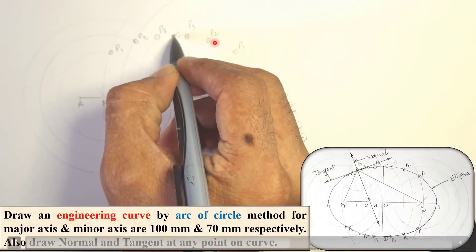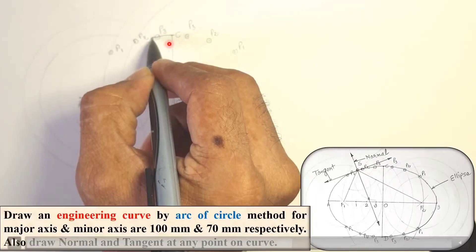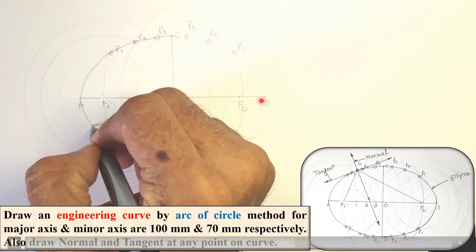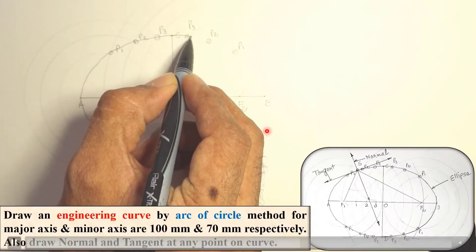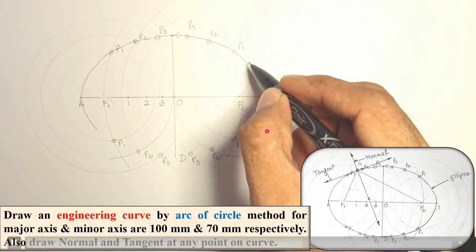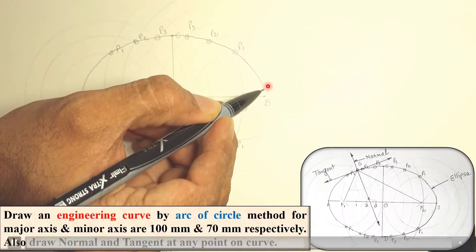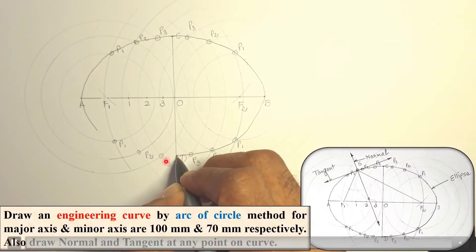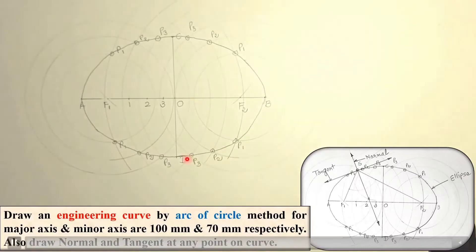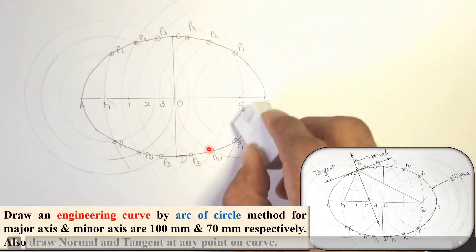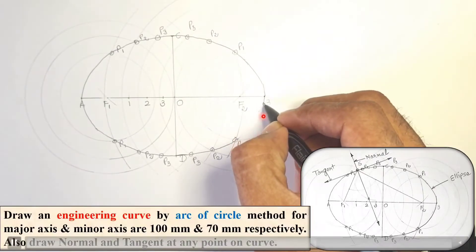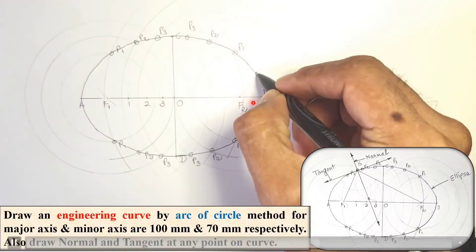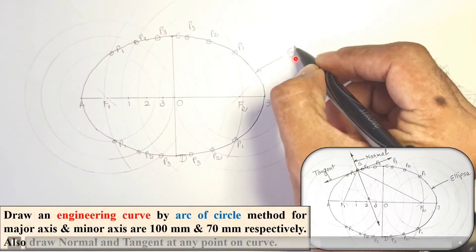Now join all the points — P1, P2, P3 — with a smooth curve. Take care that the curve passes through points C, A, D, and B. This is your output; label it as ellipse. We have now completed the first task of drawing the engineering curve.